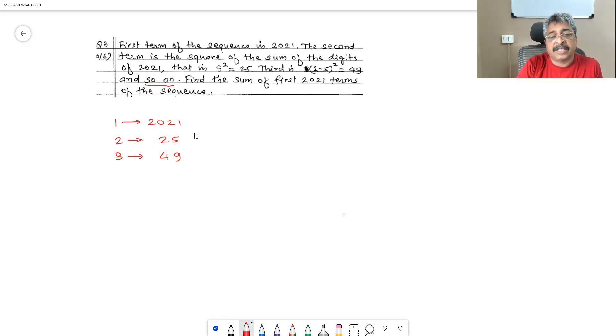However, unless and until there is some symmetry or pattern in these numbers, solving this problem is practically impossible and therefore students need to keep the patience and keep on writing few more terms and then we will realize that the terms will display some pattern and using that pattern, we will be able to write down the sum total of all 2021 terms.